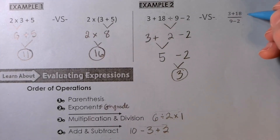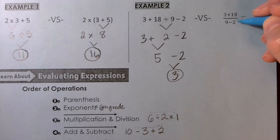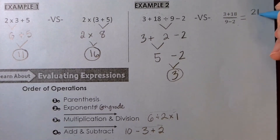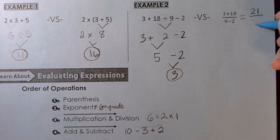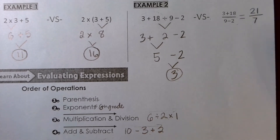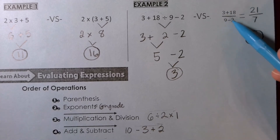For the fraction bar version, I'll show my solving off to the side. Eighteen plus three is 21 — I still have division, I just eliminated the addition. Nine minus two is seven. Now I have 21 divided by seven, which equals three. Both expressions equal the same thing, even though we didn't do division first on the fraction bar version — interesting!